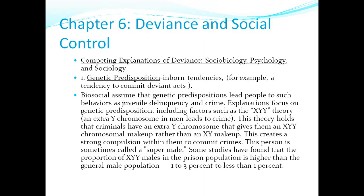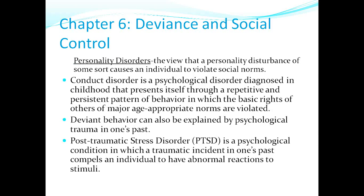For the exam, be aware of the competing explanations of deviance: social biology, psychology, and sociology. Remember we talked about genetic predispositions for the social-biological perspective. All three — social biology, psychology, and sociology — have their competing explanations of what deviance is. Make sure you know the difference between them and can identify them, because they will be on the exam.